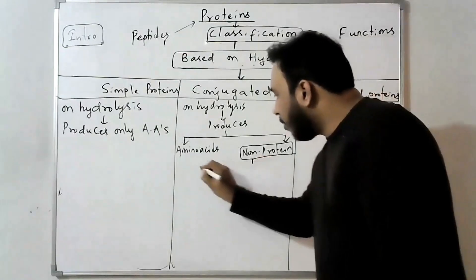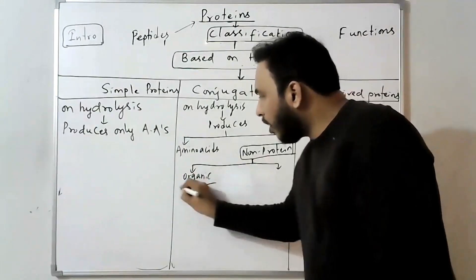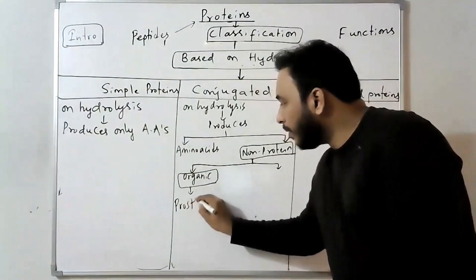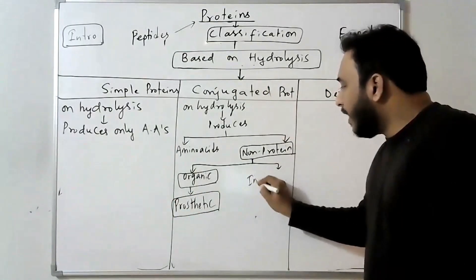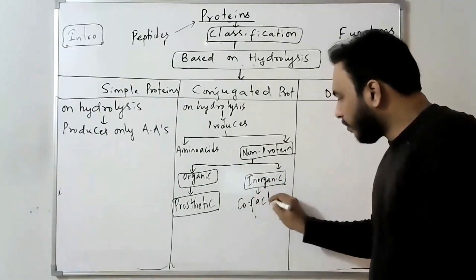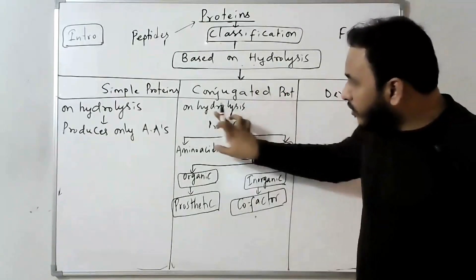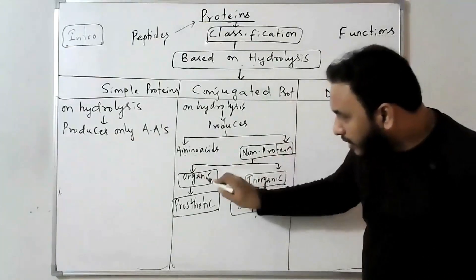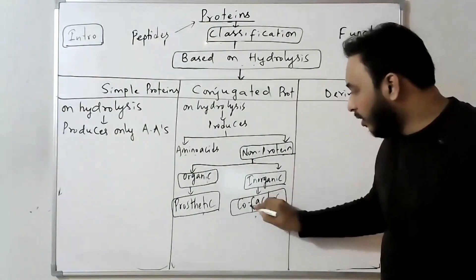If that non-protein component is organic, it is called a prosthetic group. If the non-protein component is inorganic, it is called a co-factor. Conjugated proteins on hydrolysis produce two components: amino acids and a non-protein component — prosthetic group if organic, co-factor if inorganic.